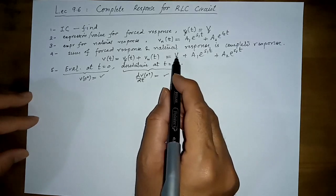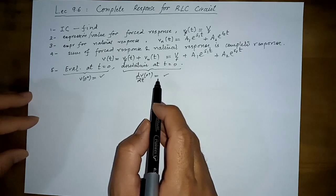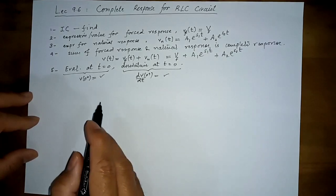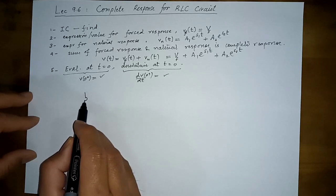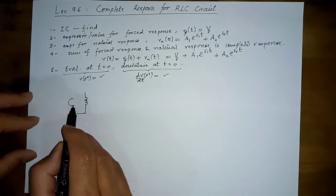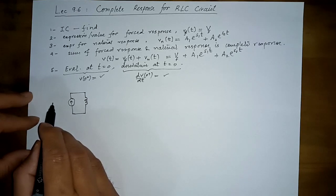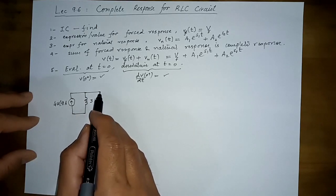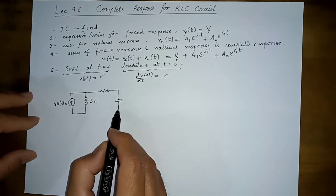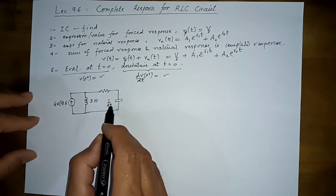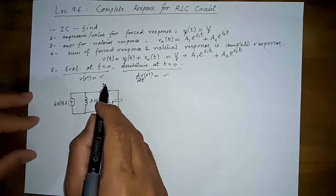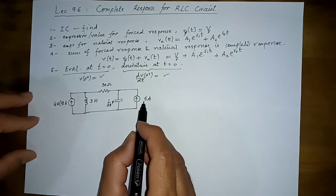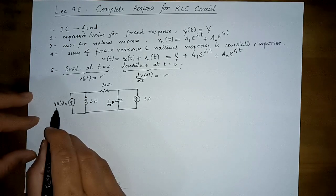Once A1 and A2 are known, and since the forced response constant was already found, everything is determined. This process is best understood through an example. The book presents a circuit with a 4u(t) ampere current source, a 30-ohm resistor, an inductor, a capacitor of an unusual value to simplify calculations, and a 5-ampere current source.